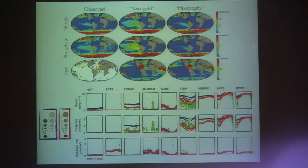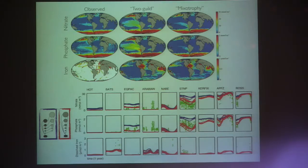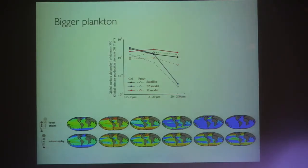Looking at nutrients — nitrate, phosphate, and iron — comparing the two-guild model and the mixotrophy model, we see a lot of excess nutrients being mopped up in the mixotrophic model. That's one major effect, but it's not huge differences overall. Where big differences come in is that we get a lot bigger phytoplankton in the mixotrophic model — these uncompetitive groups are now grazing on smaller groups, giving them an advantage.